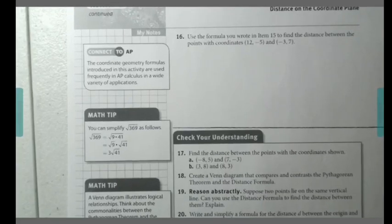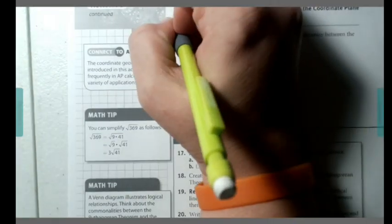Now we are finally down to our last section of Lesson 5-1, which covers question 16 only. This question asked us to use that formula we came up with in item 15 to find the distance between coordinates (12, -5) and (-3, 7). So I am going to bring that formula over.